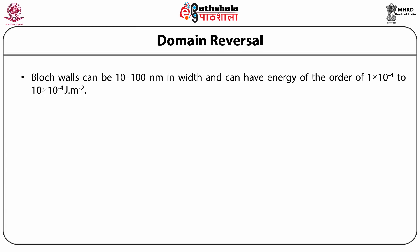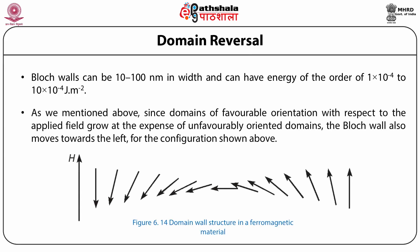A Bloch wall defines a region between two neighboring domains where the spin moments change gradually from one orientation to another, as shown in the figure in the case of 180-degree or anti-parallel domains. Bloch walls can be 10 to 100 nanometers in width and can have an energy of the order of 10⁻⁴ to 10×10⁻⁴ joules per meter squared. Since domains of favorable orientation with respect to the applied field grow at the expense of unfavorably oriented domains, the Bloch wall also moves towards the left as shown in the figure.